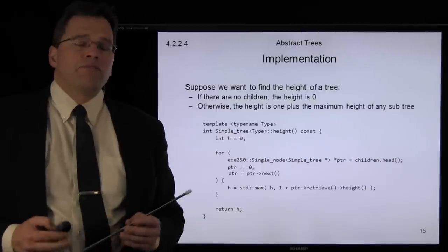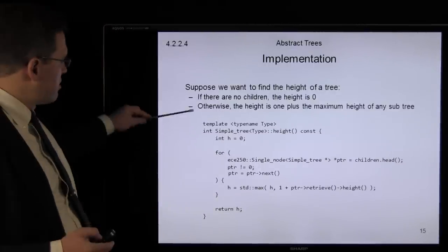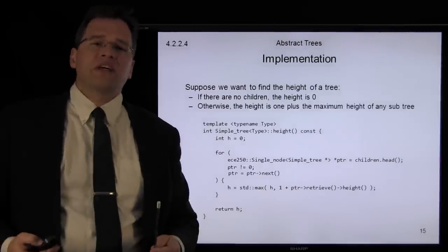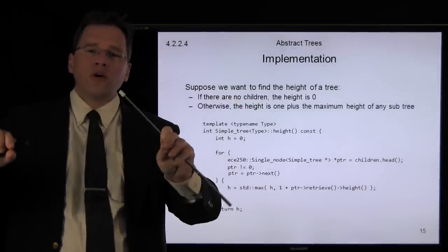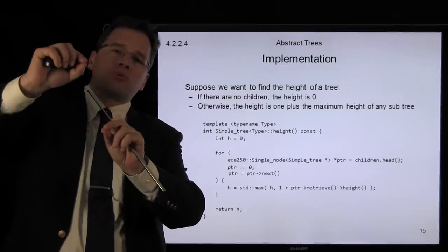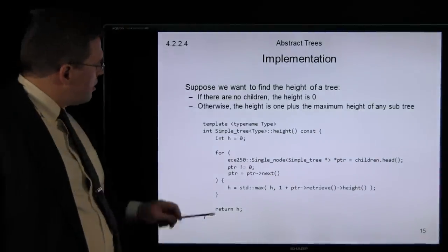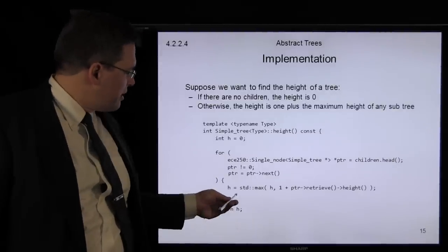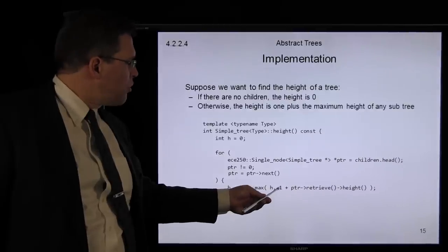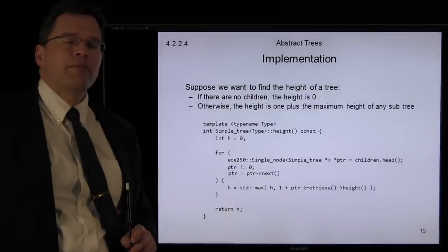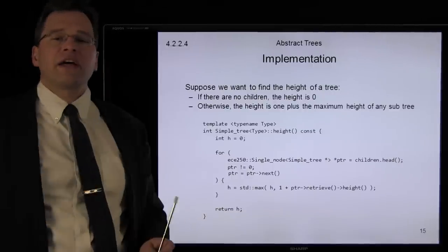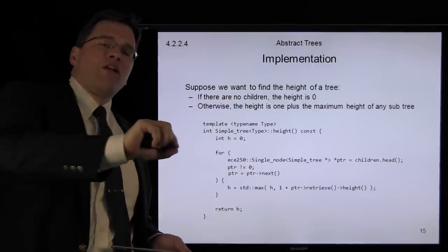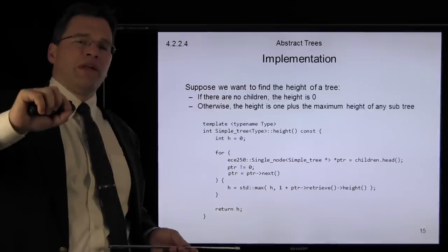For the height, we can determine it recursively as well. If a tree has no children, its height is zero. If there is a child, the height of a node is the maximum height of any of its children plus one. We initialize height to zero, step through all children in the singly linked list, and each time set h to the maximum of the current height or one plus the height of that child. Once we've gone through all children, we return the height. This is called recursively — each child checks all of its children, gets the maximum height, and adds one.